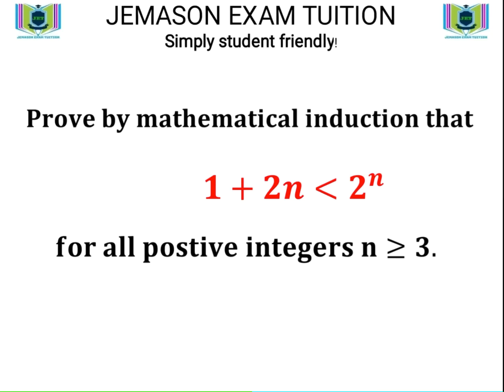Hello, today we look at this question which involves proof by mathematical induction. The question says: prove by mathematical induction that 1 + 2n is less than 2 to the n, for all positive integers n greater than or equal to 3.